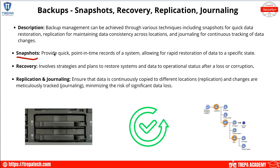Recovery involves strategies and plans to restore systems and data to operational status after loss or corruption — planning whether to take a full backup before changes, make a snapshot, create multiple containers, or use replication and journaling. Replication ensures data is continuously copied to different locations. Journaling meticulously tracks changes to minimize the risk of significant data loss. Replication is like one-to-one mirroring sent to another location, while journaling handles auditing and reporting of what has been replicated.